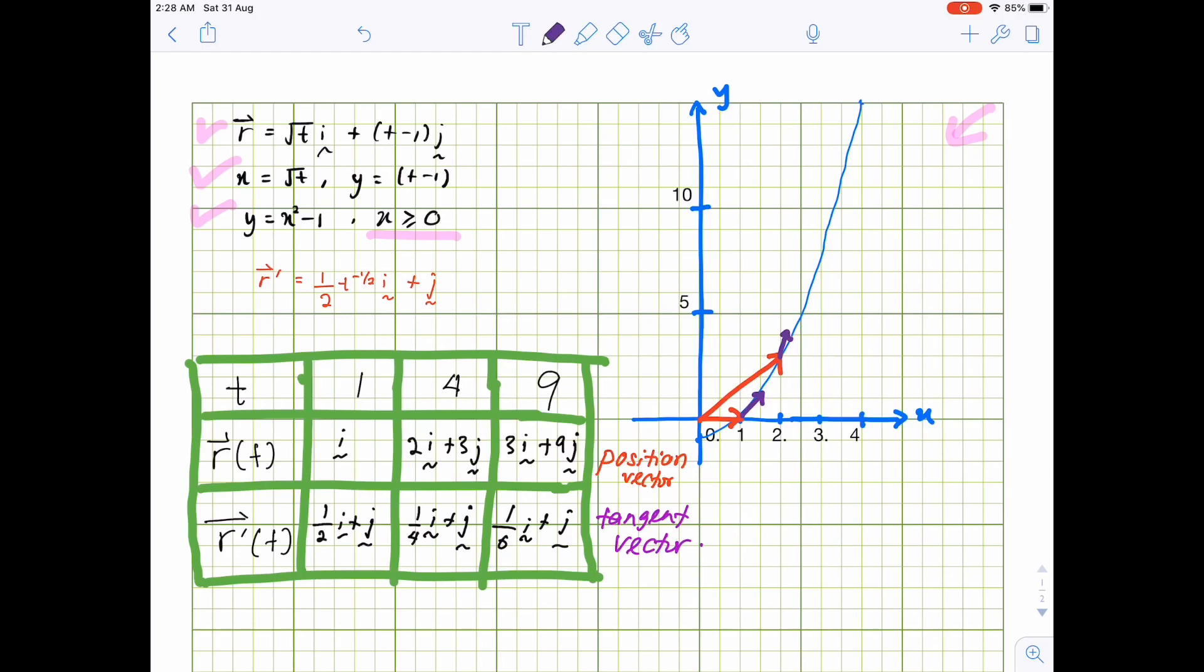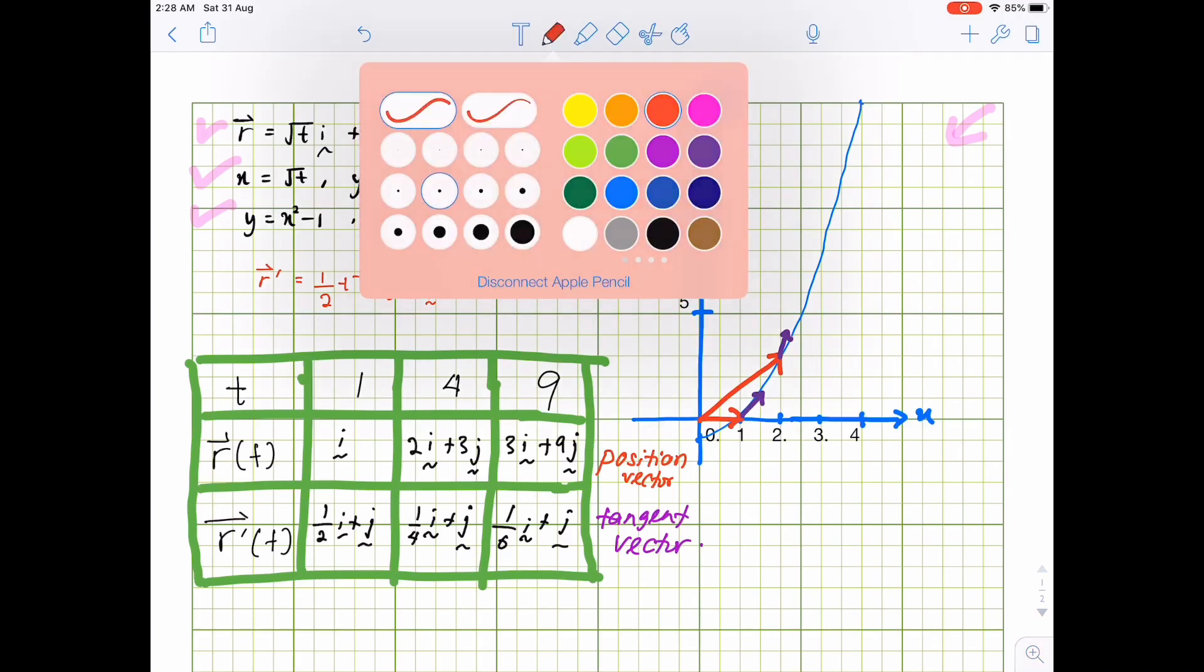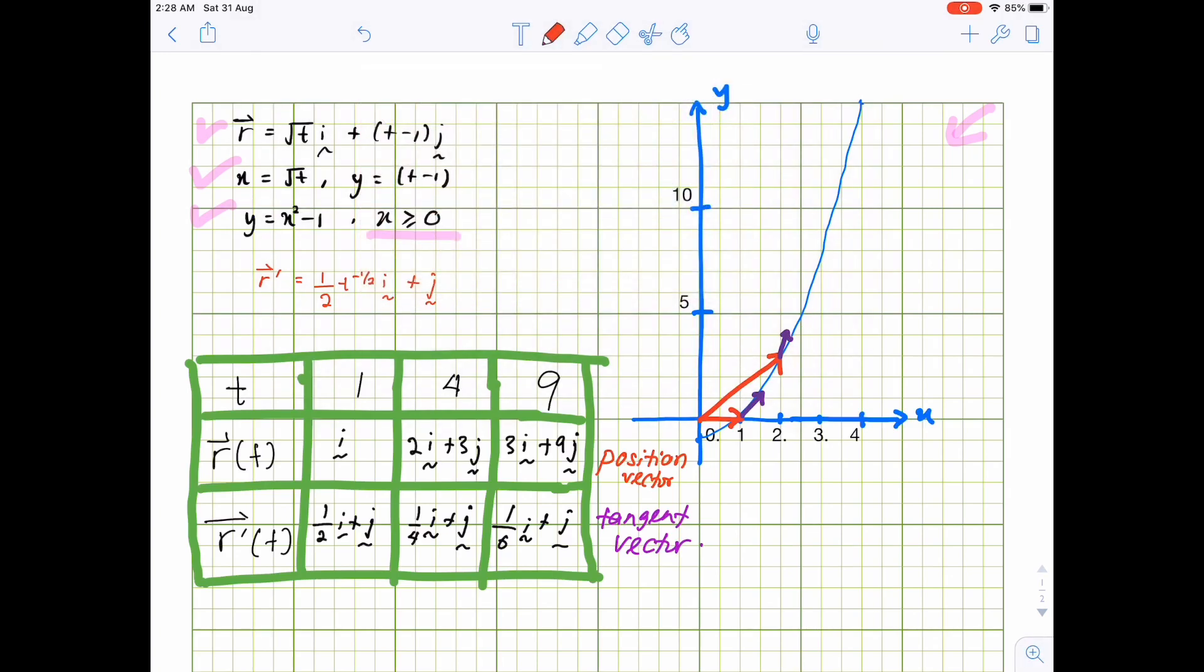And then the last one, 3i plus 9j. And the direction of the tangent vector as well as the magnitude: one-sixth i plus j. Somewhere. This is really small scale.